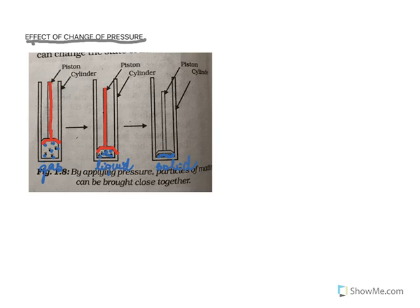So what is the effect of pressure on a gas? The gas when subjected to pressure changes to liquid, and the liquid then changes to solid because the particles begin to get closer and closer to each other.